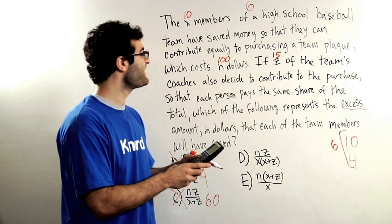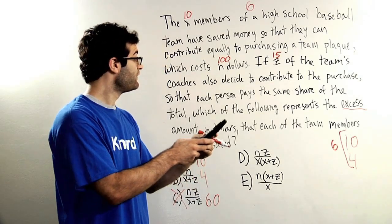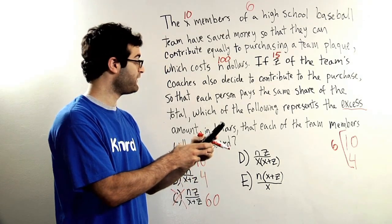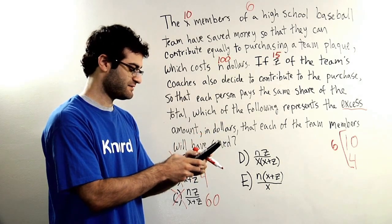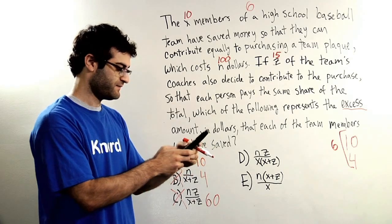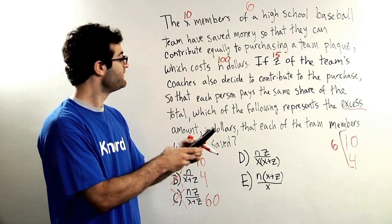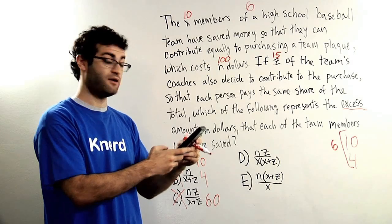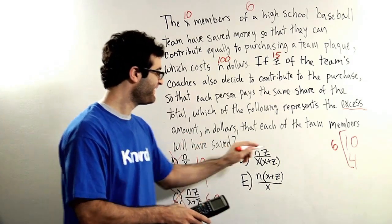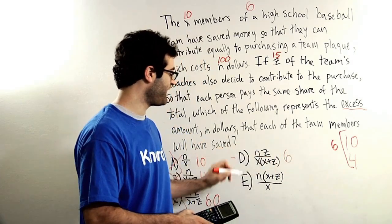Answer choice D, n times z, which is parentheses 100 times 15, divided by parentheses x, which is 10 times parentheses 10 plus 15, oh-ho, that equals 6. Isn't that nice? Let's hold on to answer choice D.